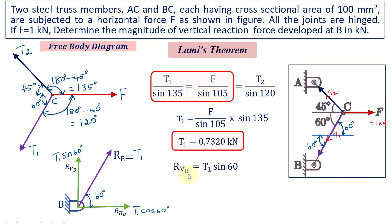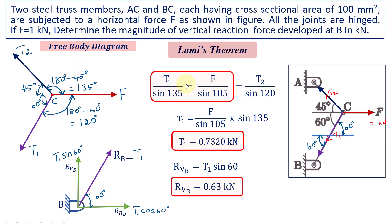The vertical reaction force RVB = T1 · sin 60° = 0.63 kilonewtons. Today we discussed how to draw the free body diagram and how to apply Lami's theorem for a particle subjected to three concurrent forces in equilibrium. Thank you for watching.